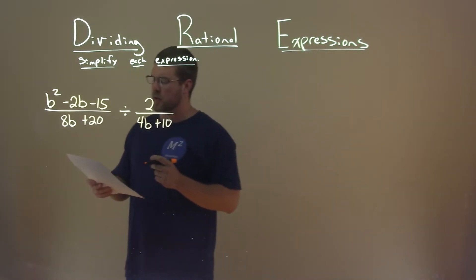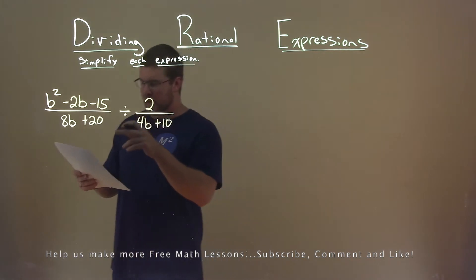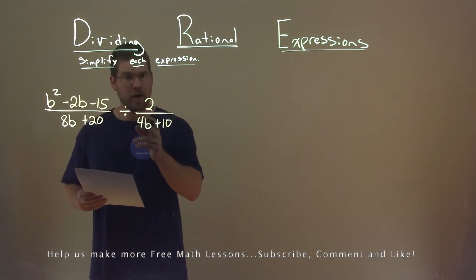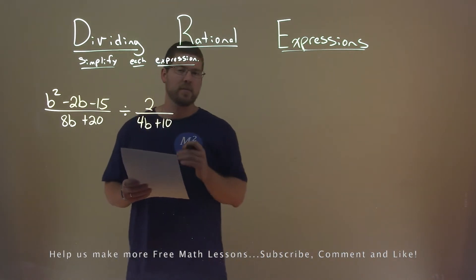We're given this expression right here, b squared minus 2b minus 15, divided by 8b plus 20, divided by 2 over 4b plus 10, and we need to simplify this expression.